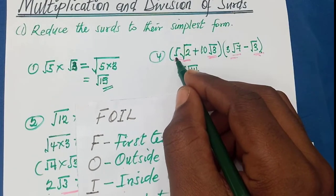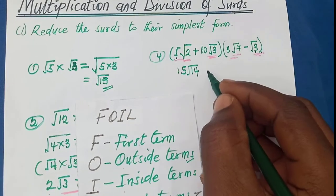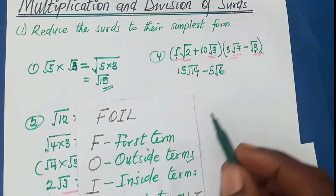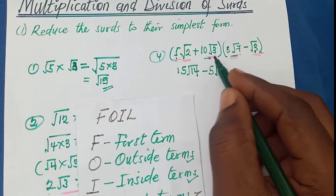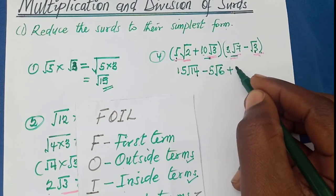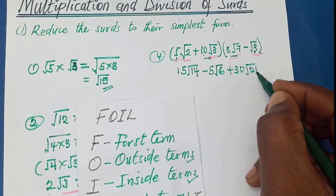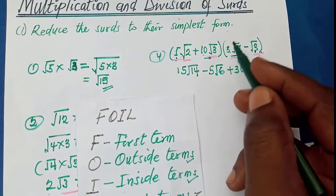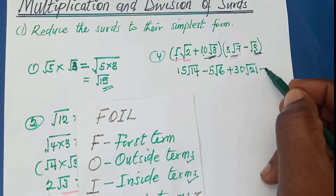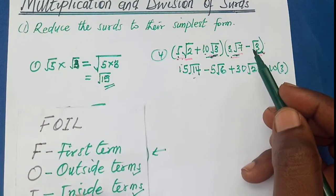The outside terms multiply: 5 root 2 times negative root 3 — there's a hidden 1 — so 5 times negative 1 is negative 5, and root 2 times root 3 gives root 6. The inside terms multiply: 10 root 3 times 3 root 7 — 10 times 3 is 30, and root 3 times root 7 is root 21. The last terms: 10 times negative 1 gives negative 10, and root 3 times root 3 gives 3.